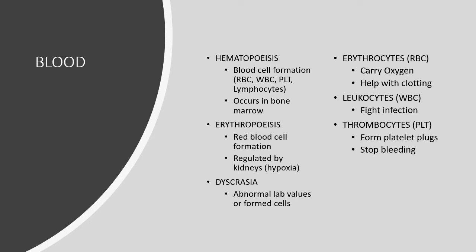Erythropoiesis is specifically red blood cell formation. This is regulated by the kidneys, and when they sense hypoxia, they secrete a hormone called erythropoietin, which then tells the pluripotent stem cell in the bone marrow to make more red blood cells.